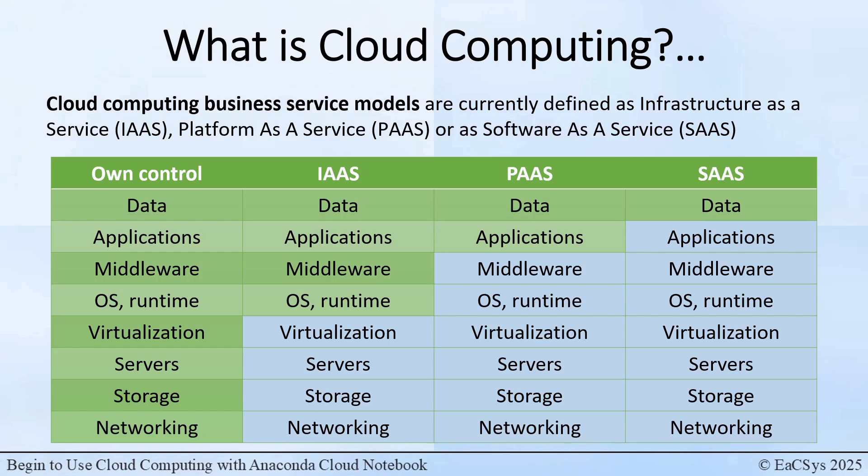In the same way, infrastructure as a service — the second column — allows you to buy control of the shown choices. For example, a set of servers where you may choose the operating system, middleware, runtime, plus data and applications.